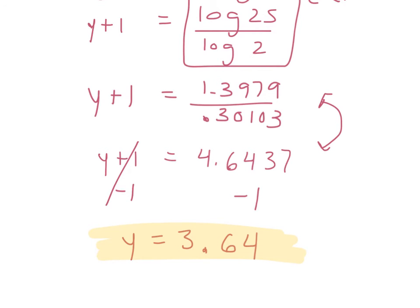It's only 3.64 — I just dropped the last two decimal places that we had. It doesn't tell us to round to the nearest anything, but you guys can just keep two decimals in your answer. So when you're doing the homework, you just need two decimals.